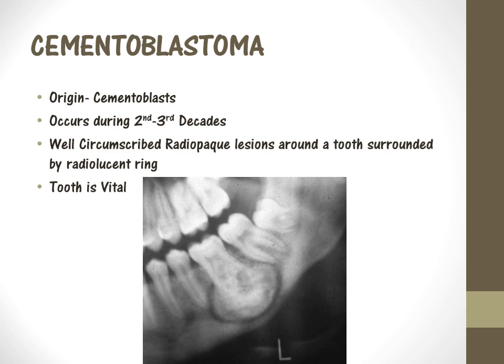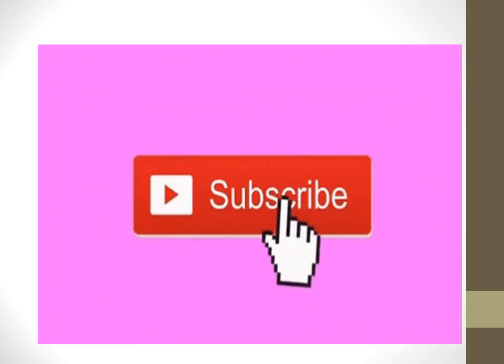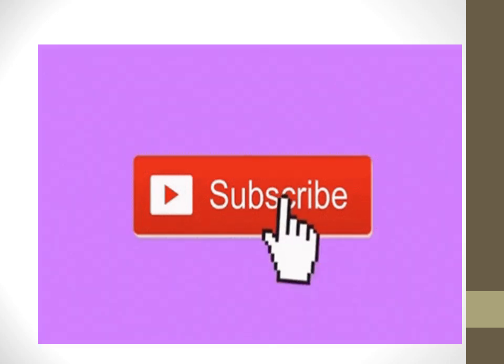Cementoblastoma's origin is from cementoblasts. It usually occurs in the second or third decades. You need to differentiate it from hypercementosis. The characteristics of cementoblastoma are a well-circumscribed radiopaque lesion surrounded by a radiolucent ring. The tooth is always vital, but in order to remove this tumor you need to remove the tooth — so excision of the tumor along with the tooth is the adequate treatment. That's it for today's odontogenic tumor video. Please subscribe if you're new, and I'll see you in the next video.